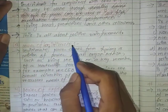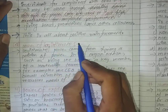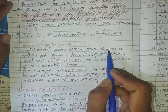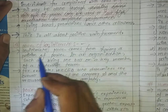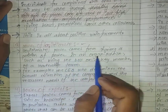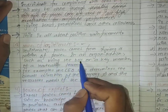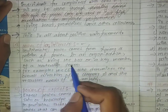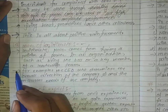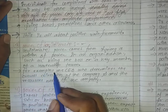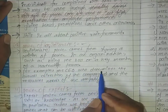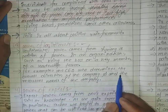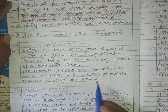Power of Legitimate: legitimate power comes from having a position of power in an organization, such as being a boss or key member of a leadership team. For example, the CEO who determines the overall direction of the company and all the resource needs of the company.